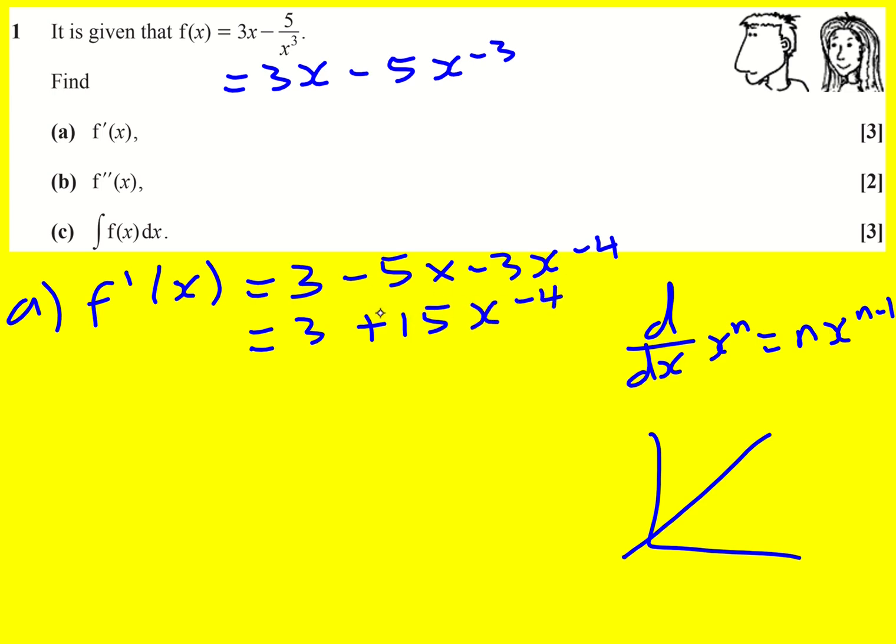I could write this as 3 plus 15 over x to the 4, but I actually think it's absolutely fine to leave it in index form.